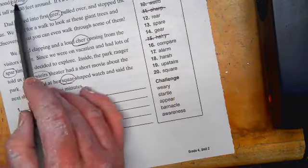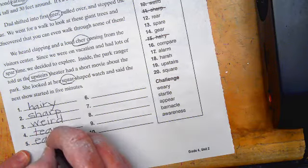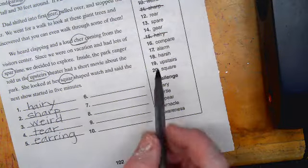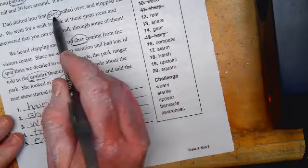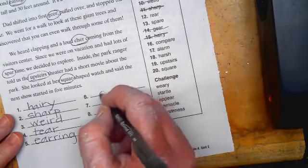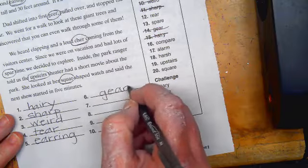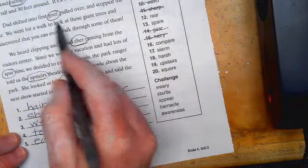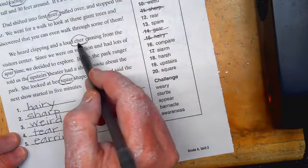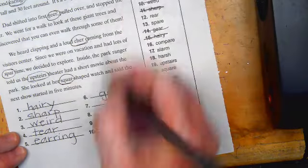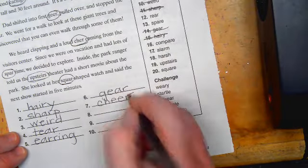Then I have earring. It has double R, E-A-R-R-I-N-G. And then we have 6 is gear. Gear is G-E-A-R. And then we have the next one is cheer. So cheer has double E, C-H-E-E-R.